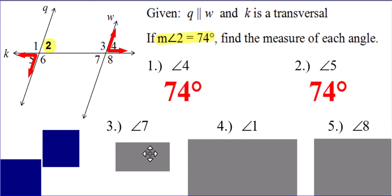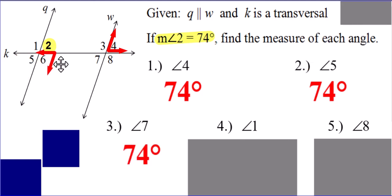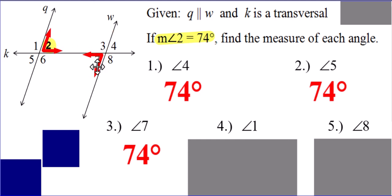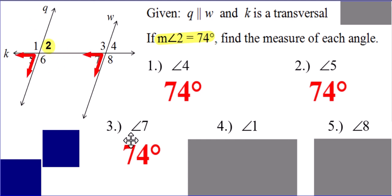What about angle seven? It's also 74 degrees. Many different ways to see this: I could have said angle four and seven are a pair of vertical angles, I could have said angle two and seven are a pair of alternate interior angles, or maybe I noticed that angles five and seven are in matching positions and therefore they are a pair of corresponding angles. So many different ways of figuring this out — 74 degrees for the measure of angle seven.